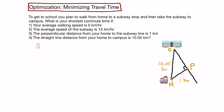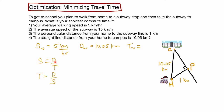So let's write that down: speed walking is 5 km per hour. The distance we have to walk is 10.05 km. Time is distance divided by speed — if speed equals distance over time, then time equals distance divided by speed. So our time would be 10.05 divided by 5 km per hour, which gives us a little over 2 hours: 2.01 hours.